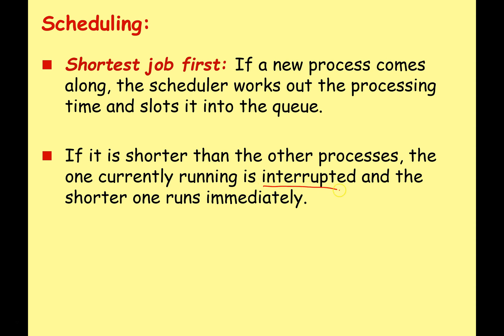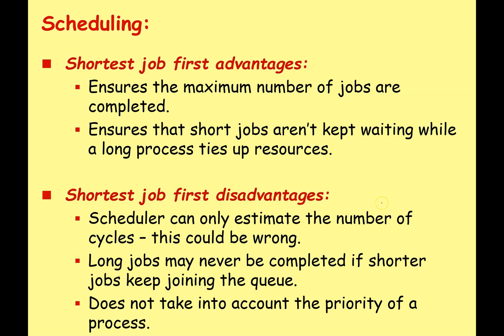Shortest job first ensures that the maximum number of jobs are completed, and it ensures that short jobs aren't kept waiting while a long process ties up resources. However, the scheduler can only estimate the number of cycles and this could be wrong. Long jobs may never be completed if shorter jobs keep joining the queue, and as with the others, this does not take into account the priority of the process.